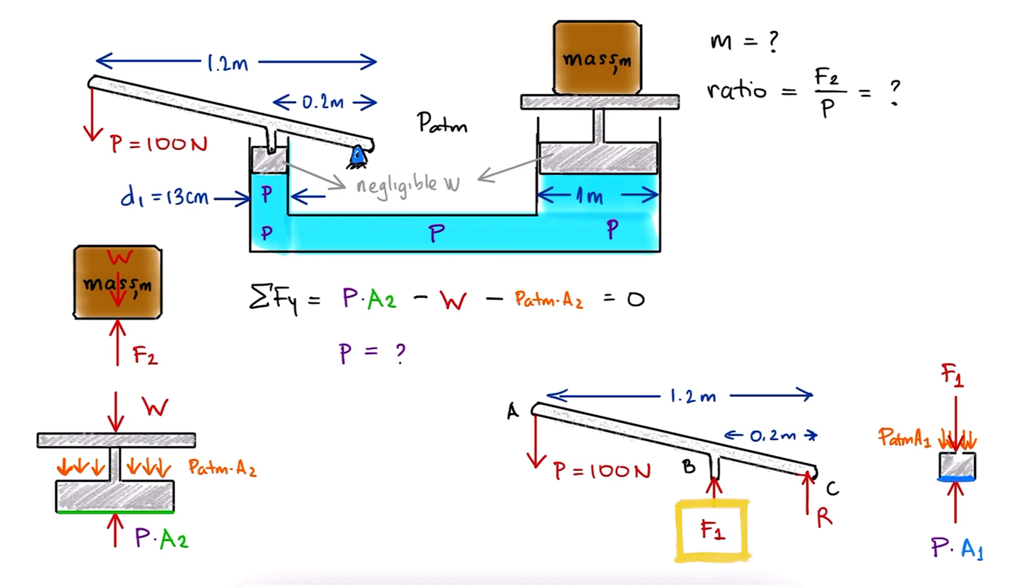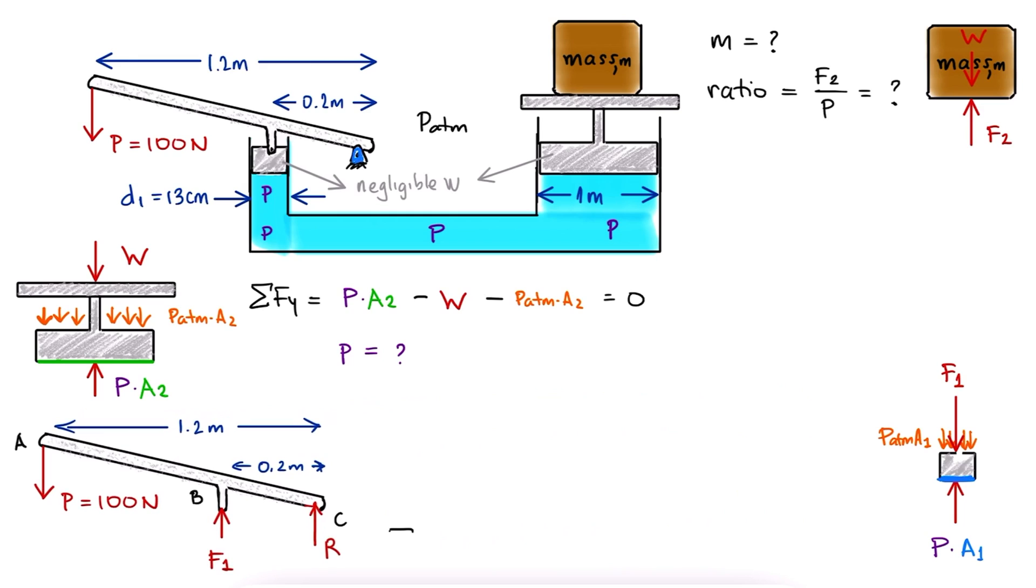We have the reaction force from the piston on the lever going up, the external force that is being applied going down, and some vertical reaction force at the hinge. We don't care about this force though, because with a sum of moments about the hinge C, we find that the force going into the piston is 600 newtons.